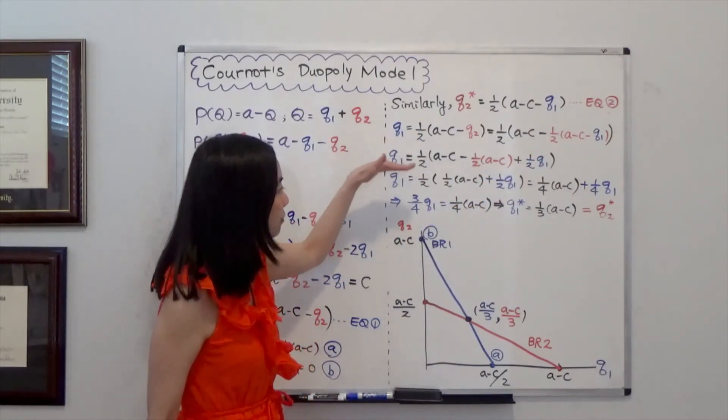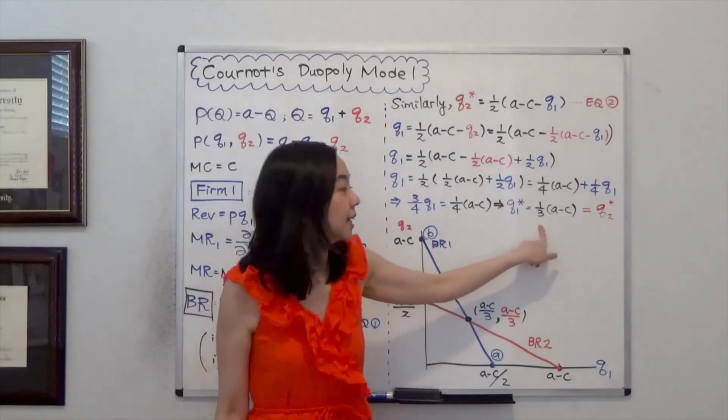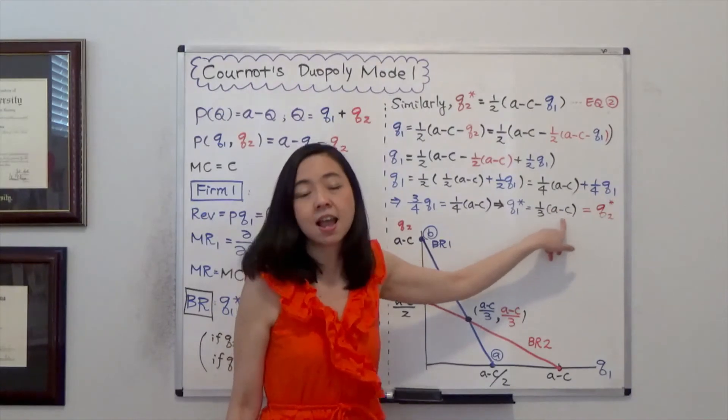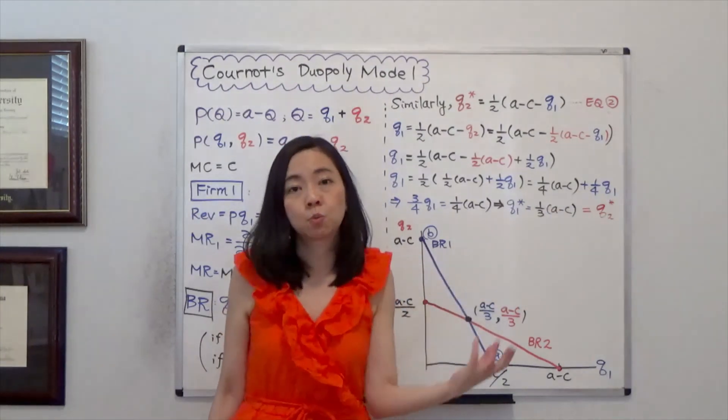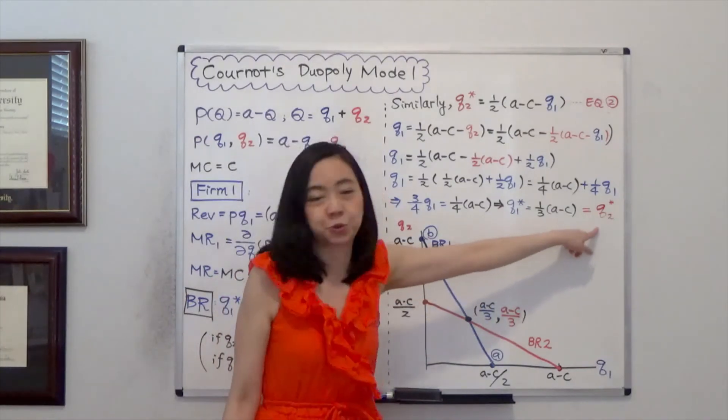And with several steps I can solve for Q1 star is equal to a third times A minus C. And because I know that firm 1 and firm 2 are identical, I know that is also my Q2 star.